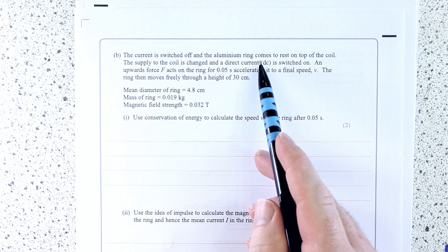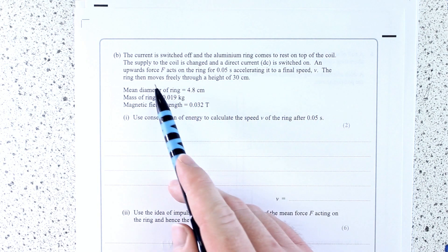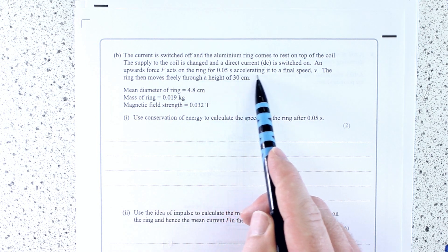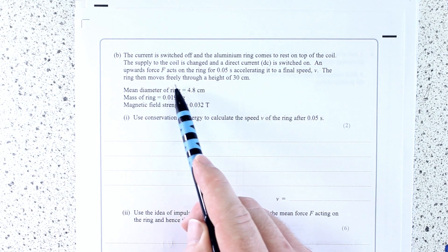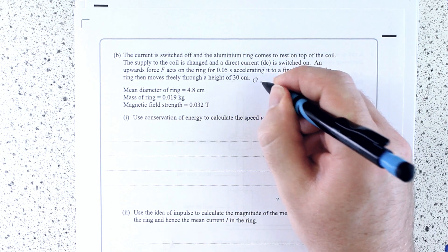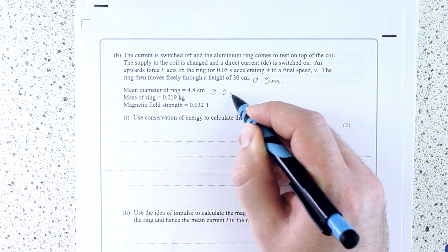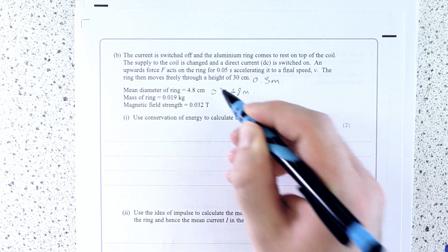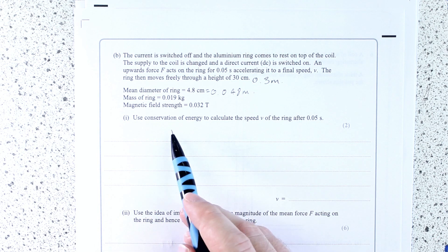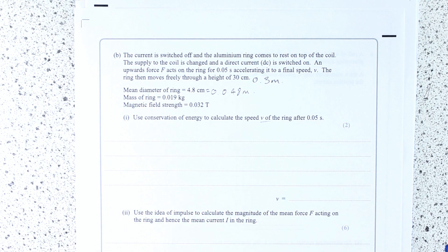Current switch off, aluminum ring comes to rest on top of the coil. Supply to the coil is changed to a direct current switched on. A force F acts on the ring for 0.5 seconds, accelerating to final speed V. Ring then moves freely through a height of 30 centimeters. Just convert that straight to meters, why not? Mean diameter of the ring is this. Convert that straight to meters.